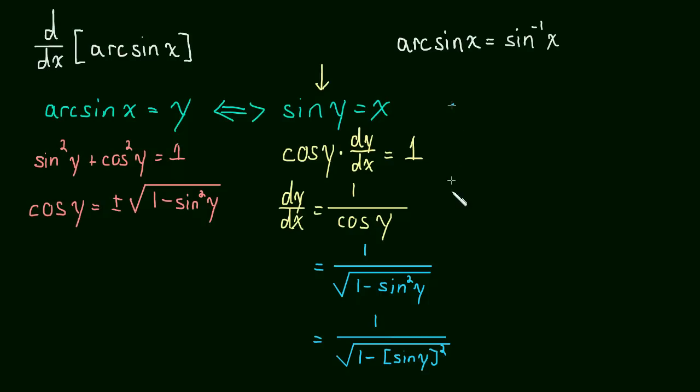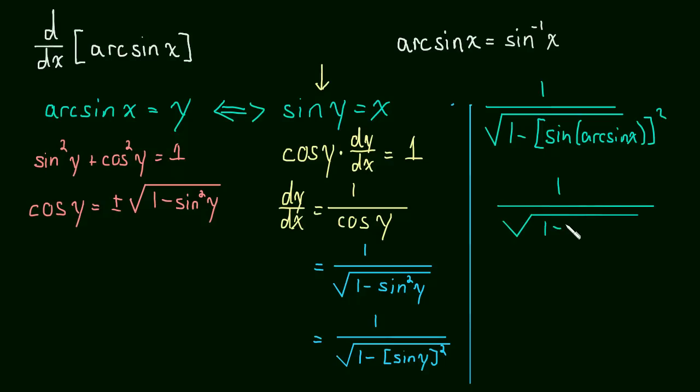So let's make our substitution. We have 1 over the square root of 1 minus, and then this is the sine of y, but y is the arc sine of x. So the sine of arc sine of x, and then this is all squared. And the sine of the arc sine, those two cancel out, so we just are left with x. So this turns out to be 1 over the square root of 1 minus x squared.